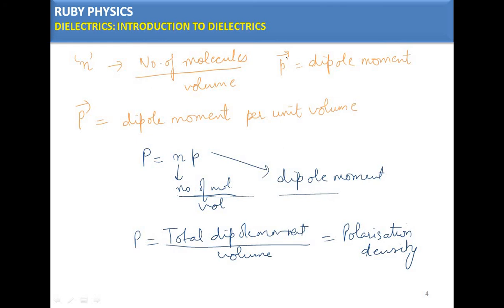An important point about non-polar dielectrics: when you place them in an electric field, an induced dipole moment exists only as long as the field is applied. As soon as you remove the electric field, the dipole moment disappears, because it has no permanent dipole moment — it was only induced. This is a very important point you should know.